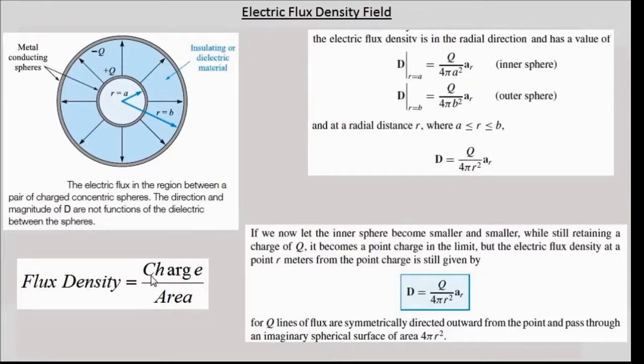With this idea, if we look at the flux density in the radial direction, it has the value of q over 4 pi r squared along a r, when r equal to a units. It equals q by 4 pi b squared along a r, when r equals b units.